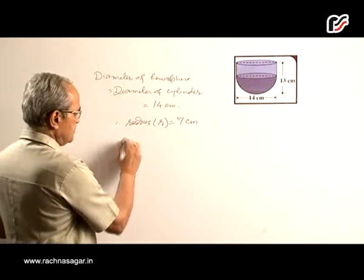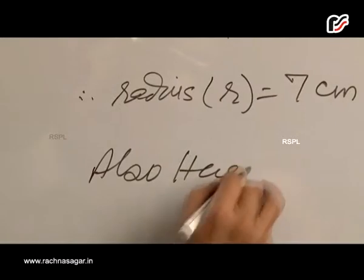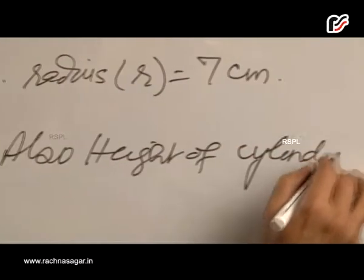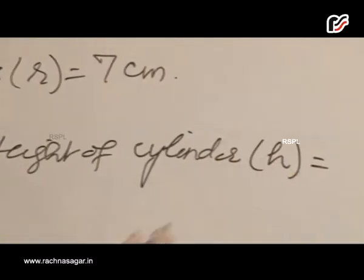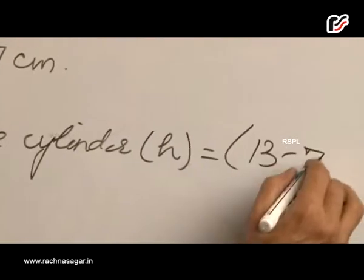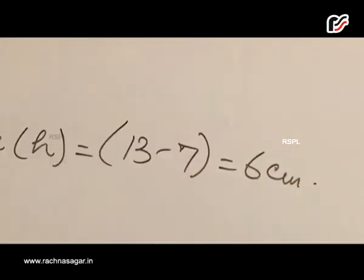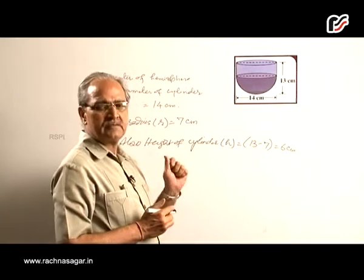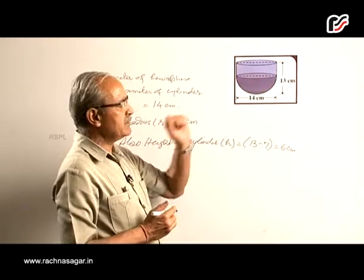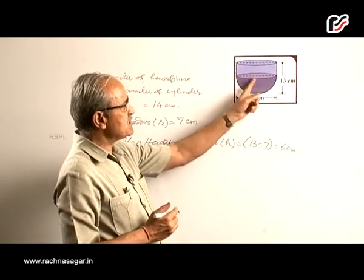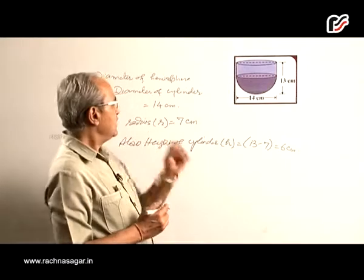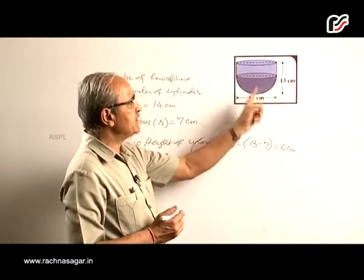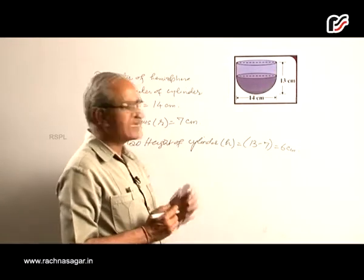Also, height of cylinder h equals 13 minus 7, that is 6 centimeters. The reason is that the height of the hemisphere is the same as the radius of the hemisphere. Since the radius is 7, the hemisphere height is also 7. So the height of the cylinder will be 13 minus 7, which is 6 centimeters.